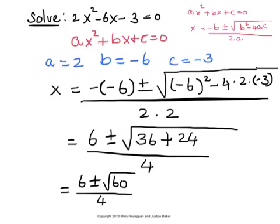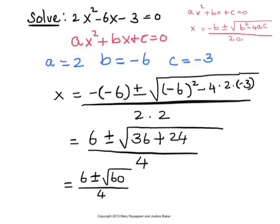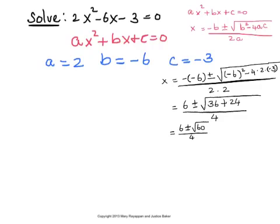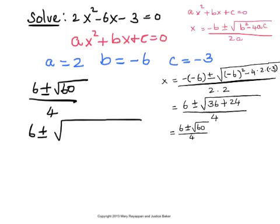Let us try to simplify root 60. So when you take, let me try to pan this. OK, we're going to simplify this further. Right now we have 6 plus or minus square root of 60 all over 4. We want to simplify root 60, and in order to do that, we will have to factor 60.